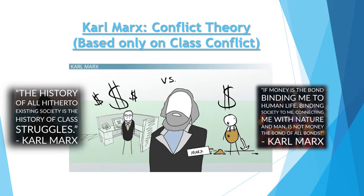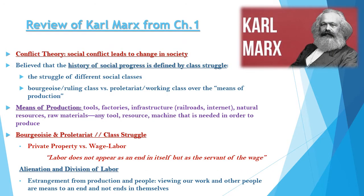We'll start on Karl Marx, who is a conflict theorist. His conflict is based mostly on class conflict — conflict between different economic classes. Two quotes from Marx: 'The history of all hitherto existing society is the history of class struggles.' And: 'If money is the bond binding me to human life, binding society to me, connecting me with nature and man, is not money the bond of all bonds?' Marx believed that social conflict between different groups is how you change society, and that the history of social progress is defined by class struggle.